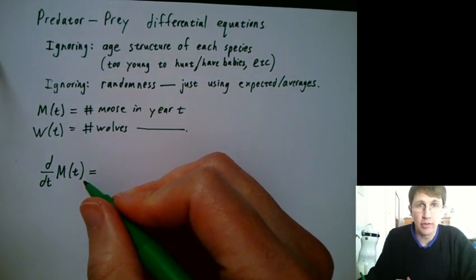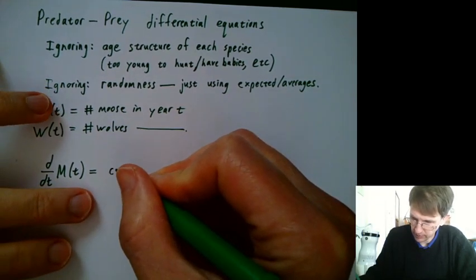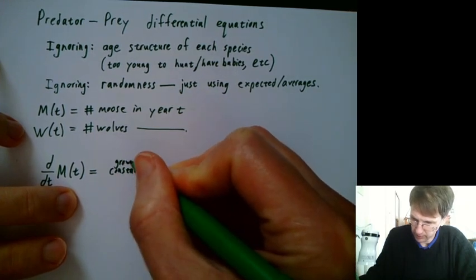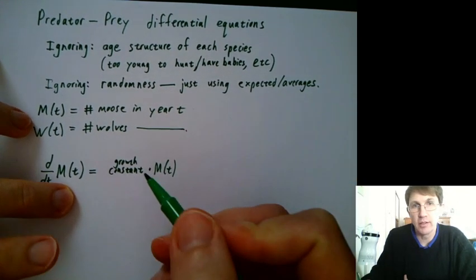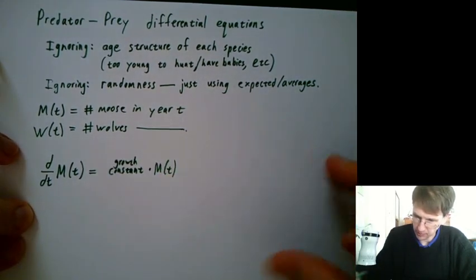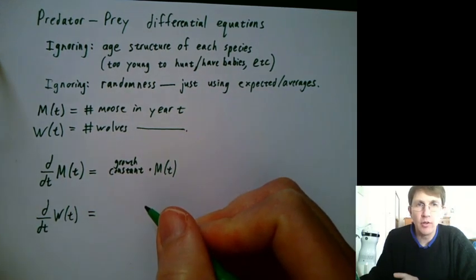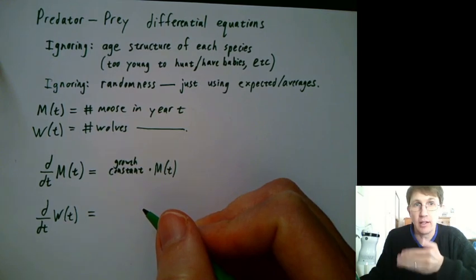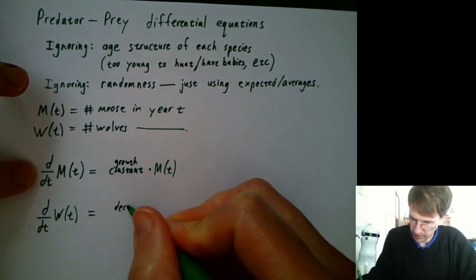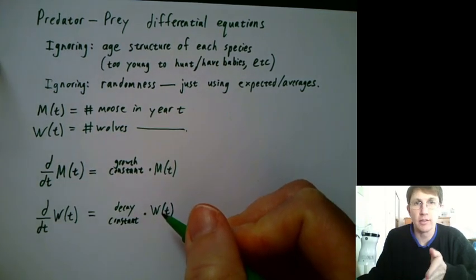Just by themselves, if there were no wolves around, populations generally grow exponentially, which is proportional to the number of animals that there currently are. So we'd have some constant, the growth constant, times m(t). This will be positive, so it might be like 3% a year or something. For the wolves, if there were no moose around, what would happen to the wolves? Not so good things, right? They wouldn't have enough energy to have the little baby wolves. So they would actually decay if there were no moose around. We'll have some kind of decay constant times the number of wolves. They would exponentially decay towards 0 in their counts.